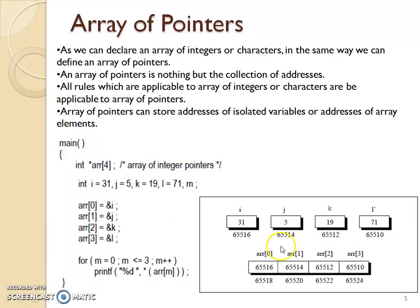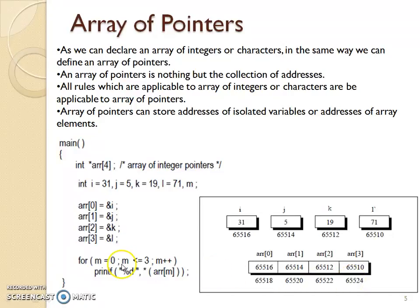The diagram represents the same thing where I, J, K, and L are integer type variables with their associated values and their own address locations. After assigning the addresses to the array, array[0], [1], [2], and [3] are holding the addresses of I, J, K, and L respectively. The array itself has its own address locations: 65518, 20, 22, and 24 respectively. With the help of a for loop, we execute a printf statement iteratively for 4 times, from m equal to 0 to m less than or equal to 3, to display the value available at the address array[m].